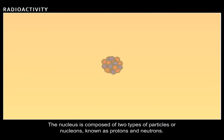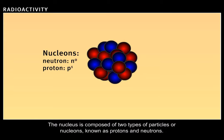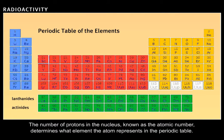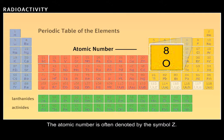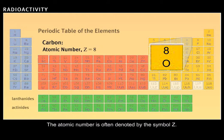The nucleus is composed of two types of particles, or nucleons, known as protons and neutrons. The number of protons in the nucleus, known as the atomic number, determines what element the atom represents in the periodic table. The atomic number is often denoted by the symbol Z.